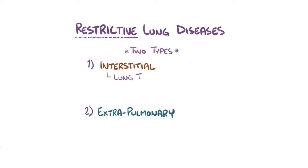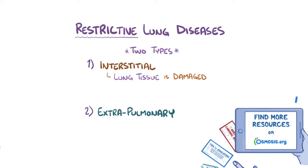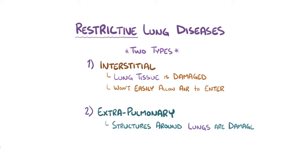For the interstitial type, it refers to the lung tissue itself being damaged. Imagine a lung being hard and stiff like tough rubber — that lung tissue won't easily allow air to go in during inhalation, thereby reducing the lung volume. In extra-pulmonary, the structures around the lung have been damaged which doesn't allow for chest expansion. Think about how hard it would be to take a breath when you have someone sitting on your chest.